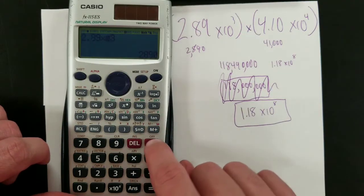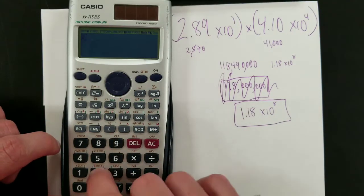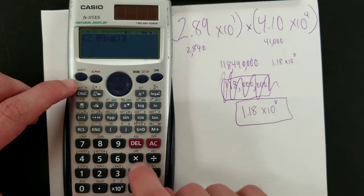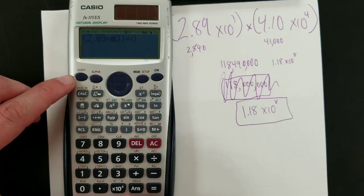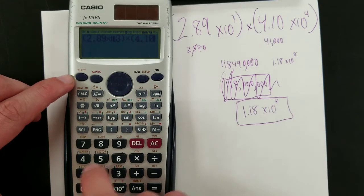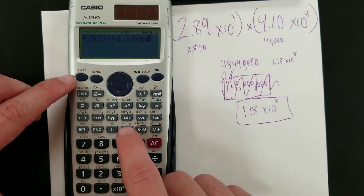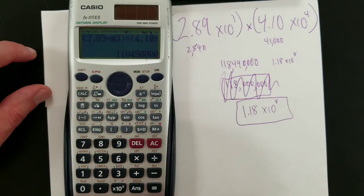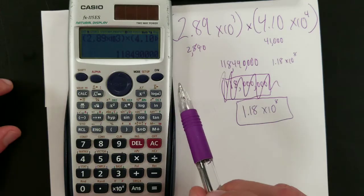For calculations, likewise, 2.89 times 10 to the third, close parentheses, times, open parentheses, 4.10 times 10 to the fourth. I opened parentheses earlier. Now I close parentheses. Gives a likewise large answer.